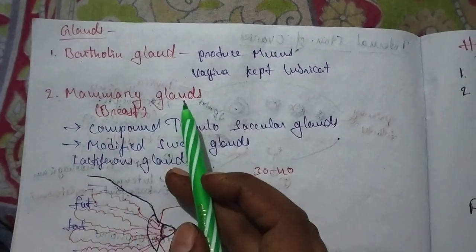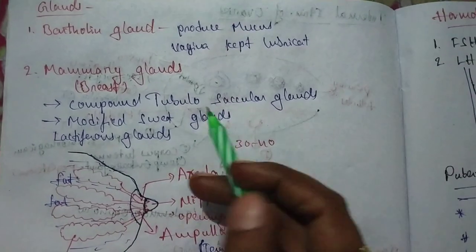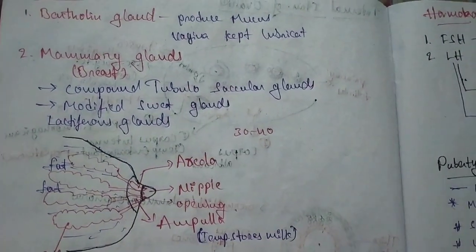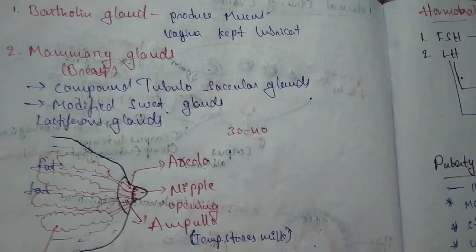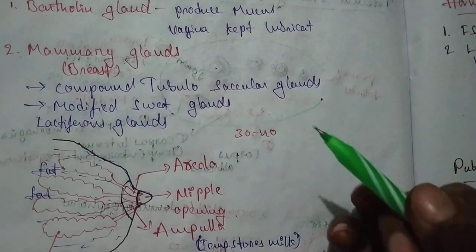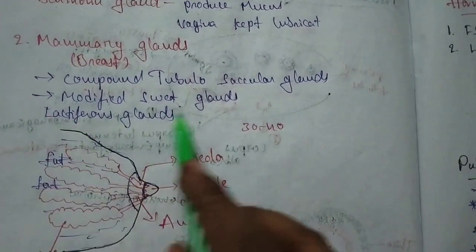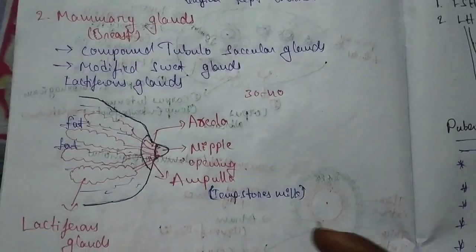The second type of glands are mammary glands or breasts. These are compound tubuloalveolar glands. These are modified sweat glands. The main glands here are lactiferous glands.